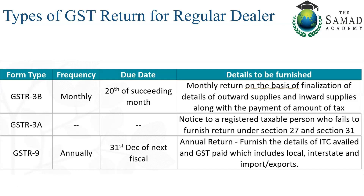The reason different dates are allocated state-wise is to avoid server overload. Previously, when everyone tried to file on the last day, if visitor load exceeded 150,000 on the portal, users could not log in. To manage this load, different states were given different due dates. I will use the 28th as a common reference date.